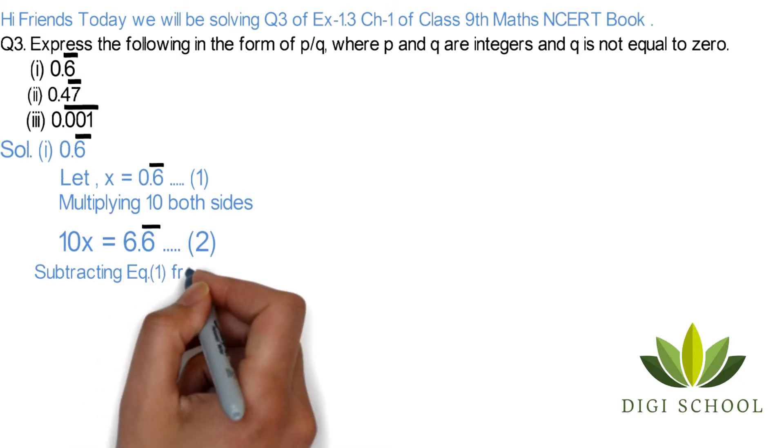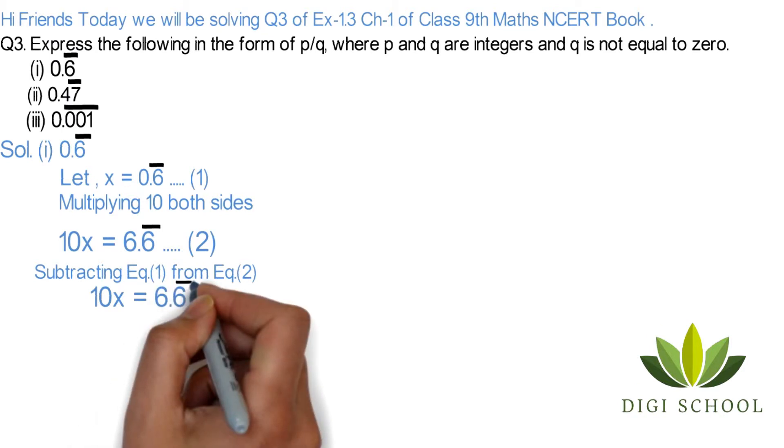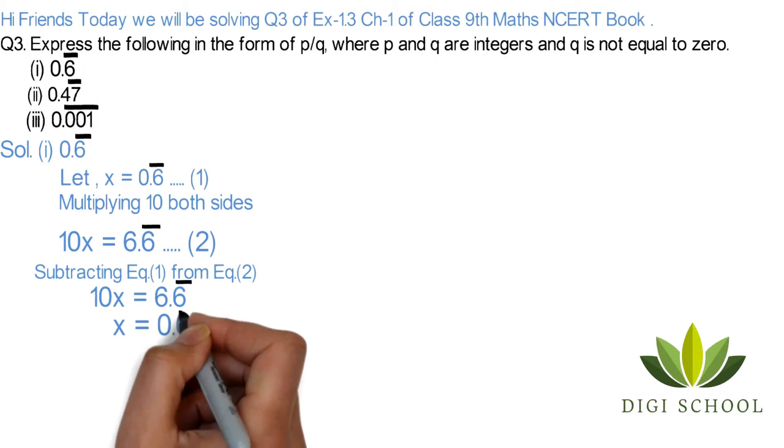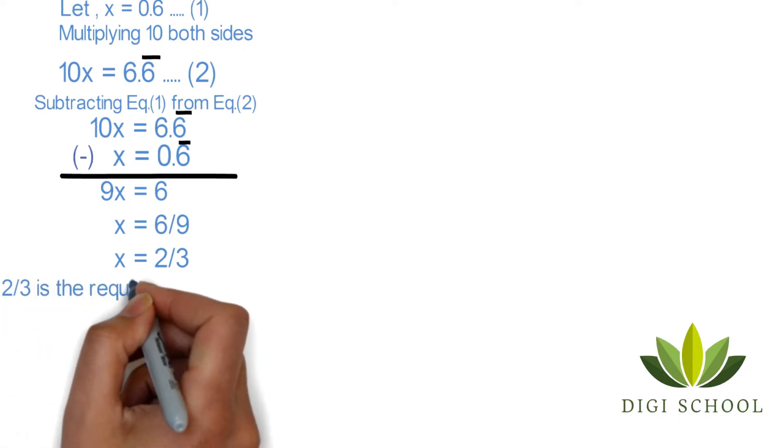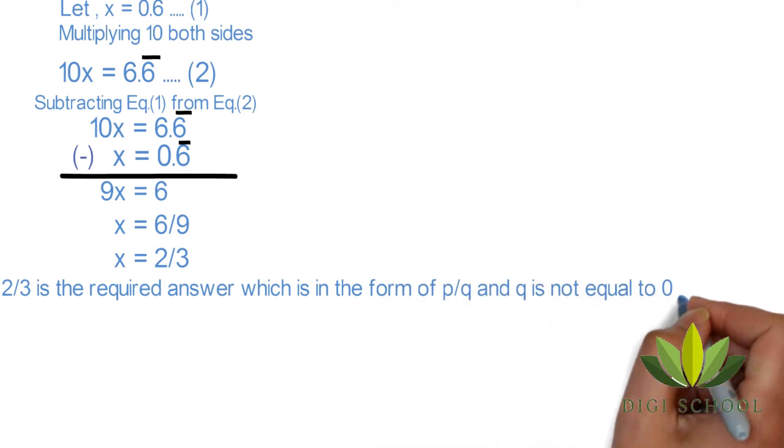Subtracting equation 1 from equation 2: 10x equals 6.6 bar and x equals 0.6 bar. We will subtract these numbers. So the answer would be 9x equals 6. x would be 6 upon 9, and if we further divide it, x would be equal to 2 upon 3. 2 upon 3 is the required answer, which is in the form of p upon q and q is not equal to zero.